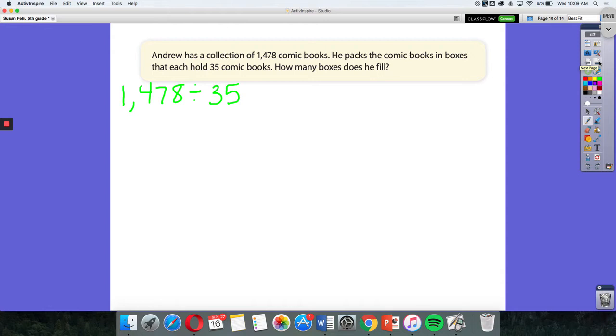So in looking at this problem up here, Andrew has a collection of 1,478 comic books. He packs the comic books into boxes that each hold 35 comic books. How many boxes does he fill? So I'm going to be dividing 1,478 by 35 and I'm going to use the area model. What's so great about this area model is that I really can use numbers that make sense to me. So I'm going to be thinking about 35 and how many groups of 35 might be able to go into 1,478.